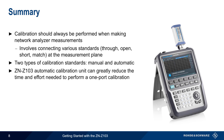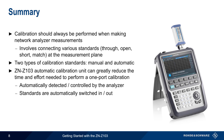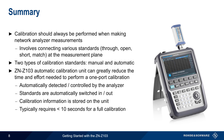The Rohde & Schwarz ZN-Z103 automatic calibration unit is supported by many Rohde & Schwarz VNAs and can greatly reduce the time and effort needed to perform a one-port calibration. The unit is automatically detected and controlled by the analyzer over a USB connection, with the standards being automatically switched in and out by the analyzer as needed. Calibration information is stored on the ZN-Z103 and is read out automatically by the analyzer as well. In most cases, calibration takes less than 10 seconds, and is therefore substantially faster than a manual calibration.